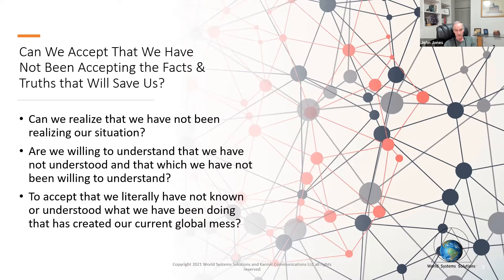We wouldn't have the weather conditions and the fires that we're having now. We wouldn't have the drought and we wouldn't have the non-sustainable life process that we're operating from in the moment. So if we can just accept, realize and fully accept that we do not know and we do not understand what we've been doing and how we've created our current global mess.